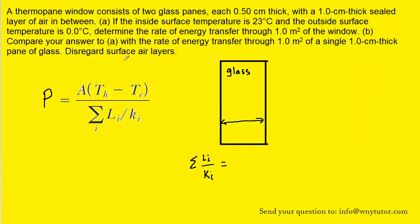In part B, we're asked to calculate the rate of energy transfer through one meter squared of just a single one centimeter thick pane of glass. So in this case, the window is quite simple. It's just one layer of glass. We can still use the same formula to calculate the rate of energy transfer.